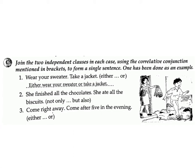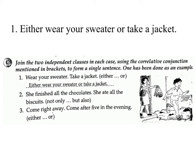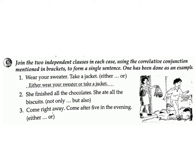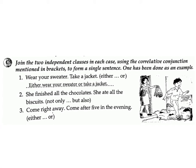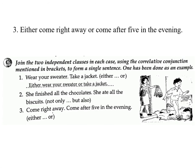Exercise C: Join the two independent clauses in each case using the correlative conjunction mentioned in brackets to form a single sentence. One has been done as an example. One: 'Wear your sweater / take a jacket.' (either...or) — Either wear your sweater or take a jacket. Two: 'She finished all the chocolates / she ate all the biscuits.' (not only...but also) Answer: Not only did she finish all the chocolates but also she ate all the biscuits.